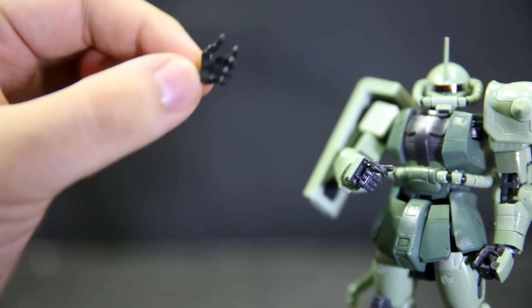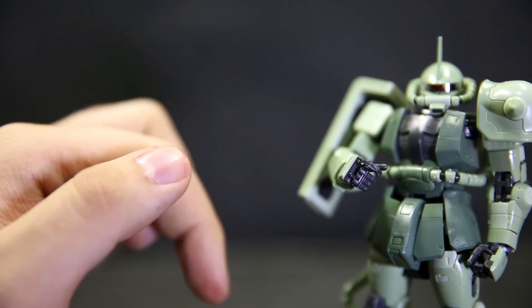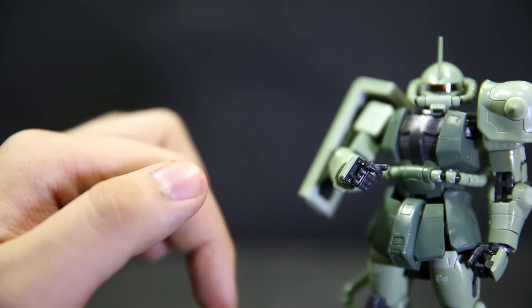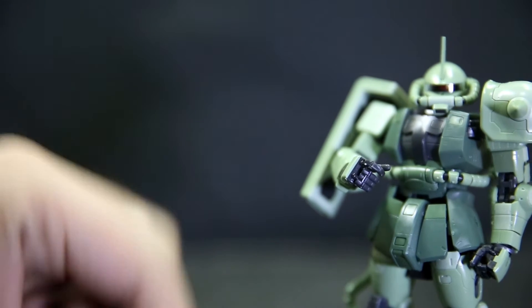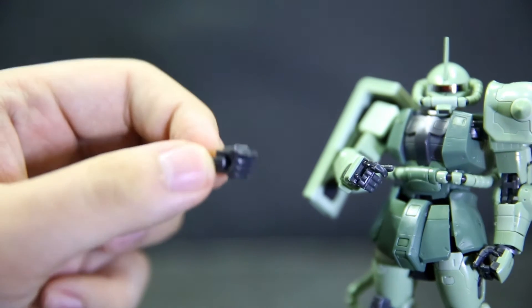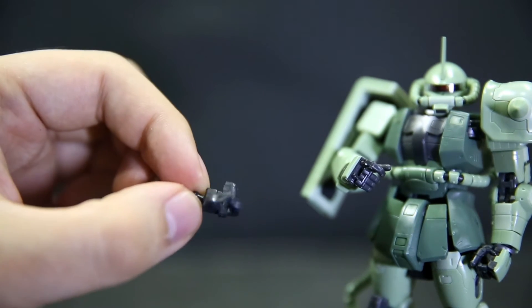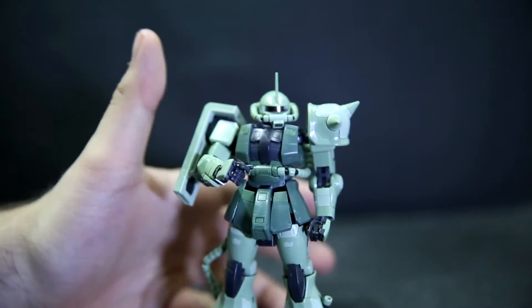He also has some extra hands to come with him. He's got a relaxed open hand for holding the bazooka or gun. He has the fist hands. Just fists. Not for holding. Just for literally just punching. So for both hands. He's got the fist. And he actually has a proper gun holding hand to hold the guns a bit better. Articulation.